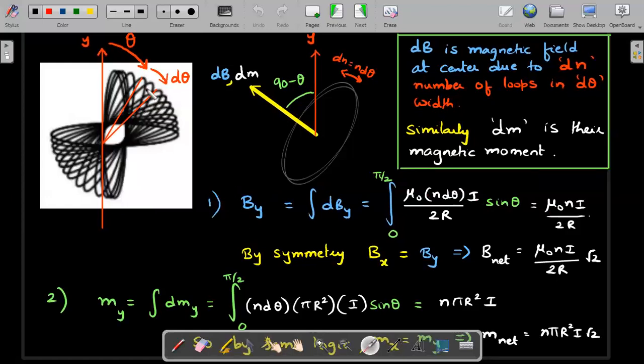In the question he asked net magnetic field, so due to symmetry you could argue directly that whatever is happening in y direction should also happen in x direction. So you could say Bx equal to By.